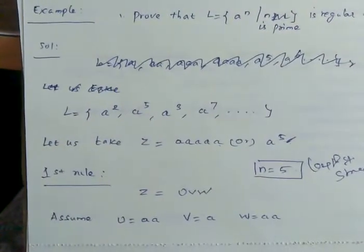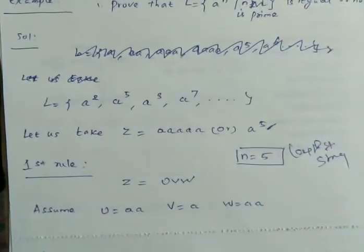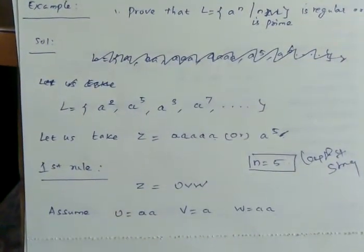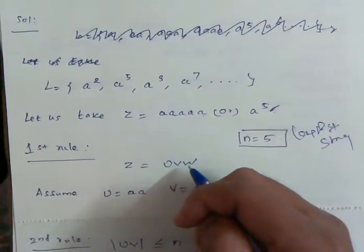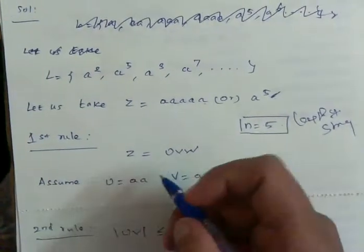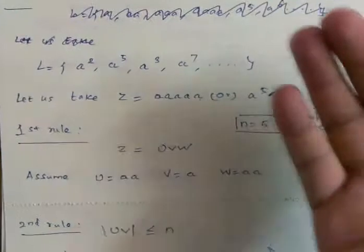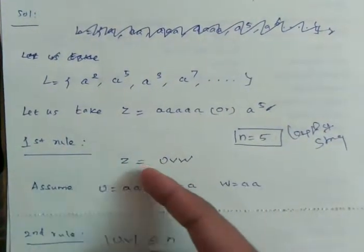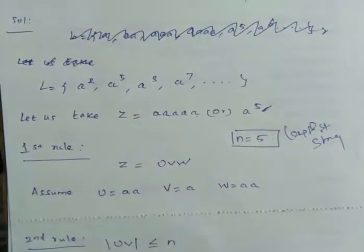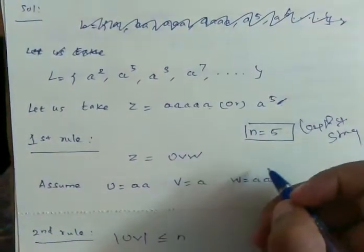According to the pumping lemma rules, the first rule is z equals u v w. So we can write a^5 in the form u v w in any way — for example, u equals a, v equals a, w equals a^3.